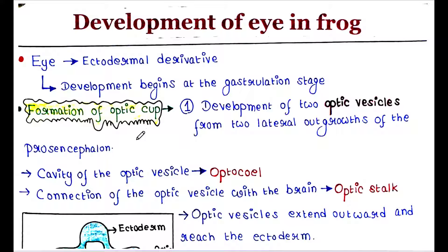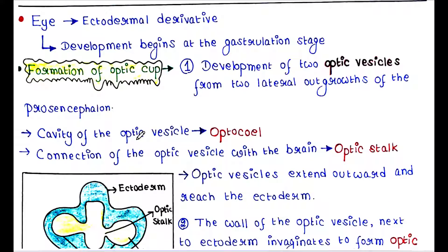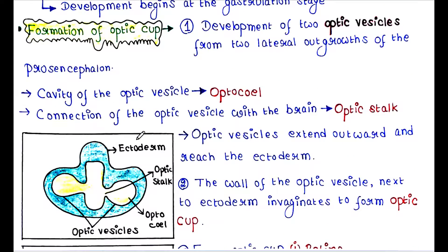First we will see the formation of the optic cup. Two optic vesicles develop from two lateral outgrowths of the prosencephalon, and the cavity of the optic vesicle is called the optocoele.